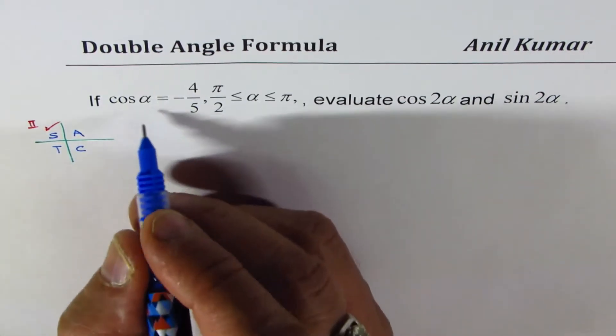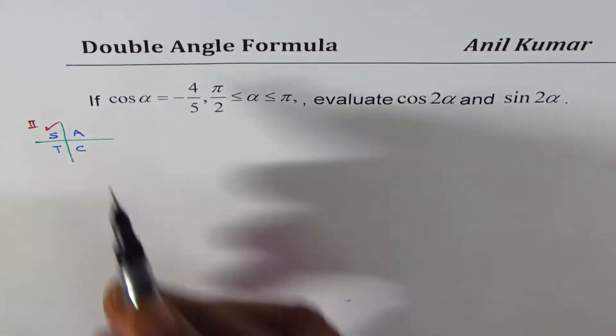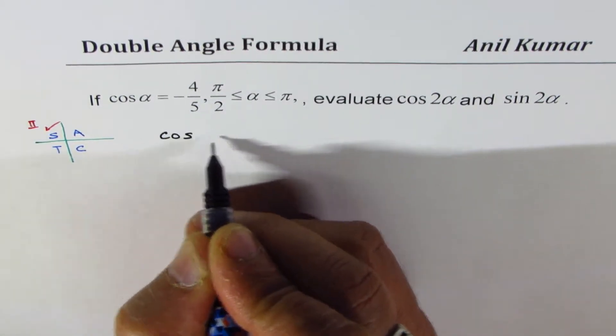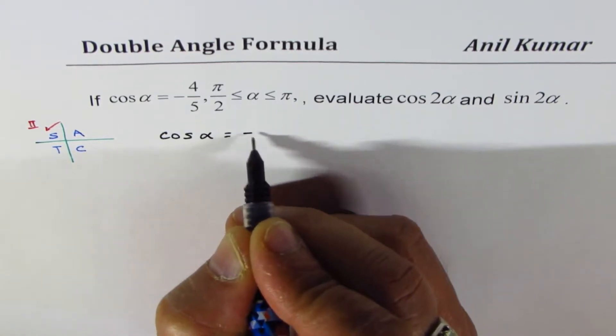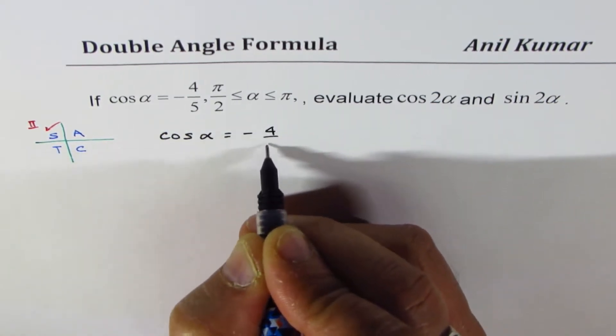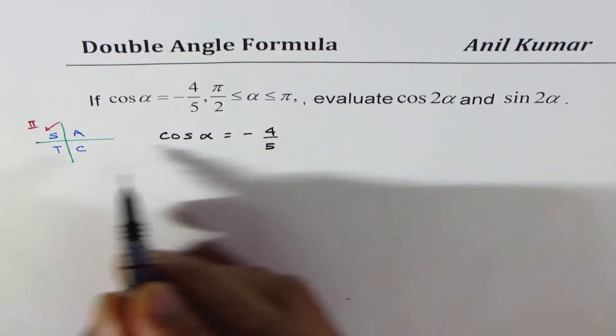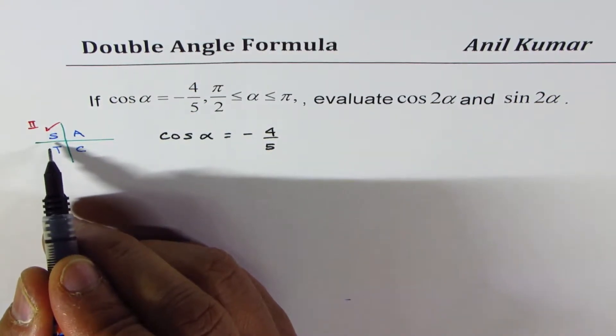So what we're given here is cos of alpha equals to minus 4 over 5. We are working in quadrant 2, the other sine will be negative.